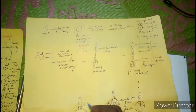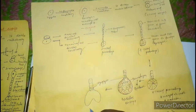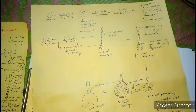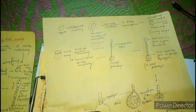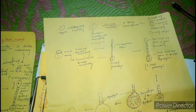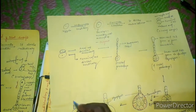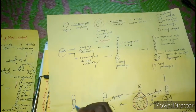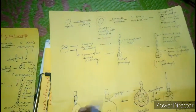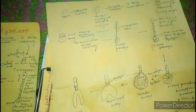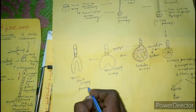This globular pro-embryo develops into a heart-shaped embryo. Next to it will be the heart-shaped embryo stage.